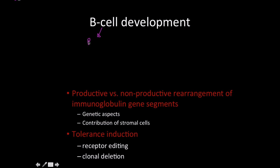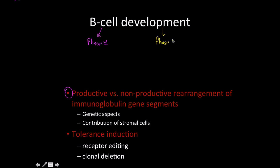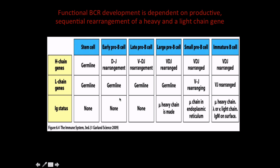For B-cell development, we have phase one happening first, and then phase two—or negative selection—where we have receptor editing and then clonal deletion happening. The functional B-cell receptor development is dependent on productive sequential rearrangement of heavy and then light chain genes. This is an overview of the whole processes we're going to talk about.